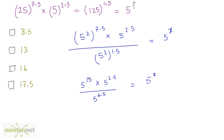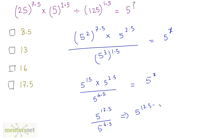Now using the law a raised to m times a raised to n equals a raised to m plus n, this becomes 5 raised to 15 plus 2.5, which is 17.5, upon 5 raised to 4.5. Using the division law, a raised to m divided by a raised to n equals a raised to m minus n, we get 5 raised to 17.5 minus 4.5 equals 5 raised to x. So 5 raised to 13 equals 5 raised to x, and x equals 13.